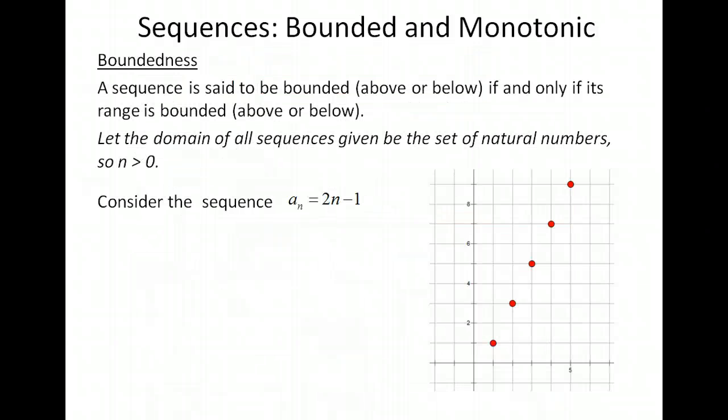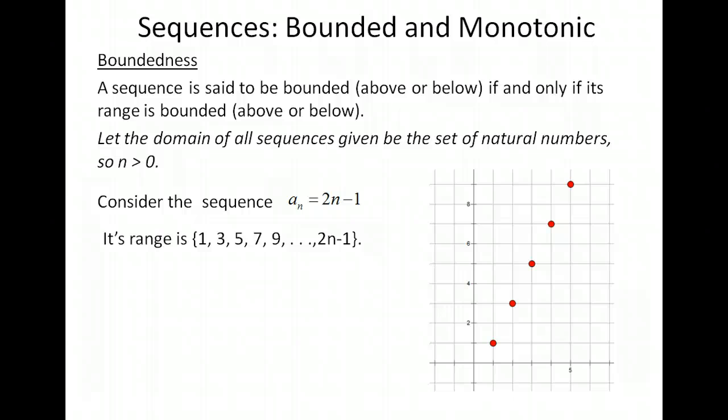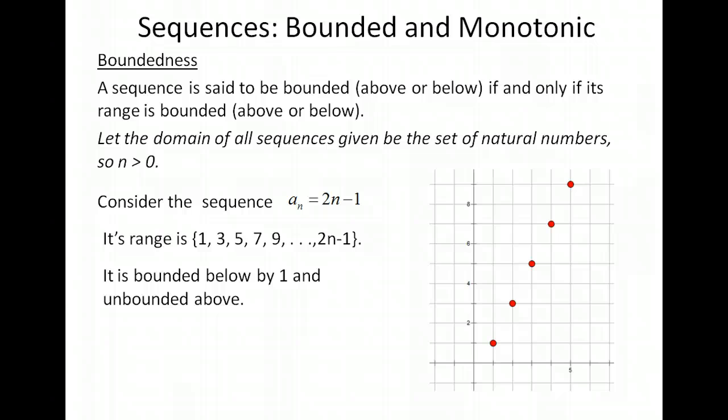Let's talk about boundedness of sequences. If the range is bounded, then the sequence is bounded. It's important to write out some numbers to decide the high and low points of the range. Looking back at our first example, 2n minus 1, the range values are 1, 3, 5, 7, 9, and so on. The lowest value is 1, but then it continues to increase without bound. So it's bounded below by 1 and unbounded above.